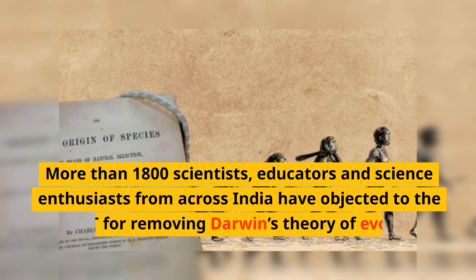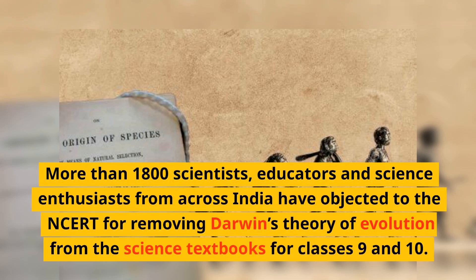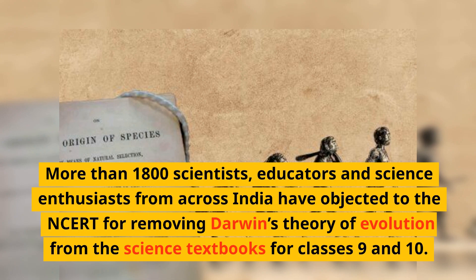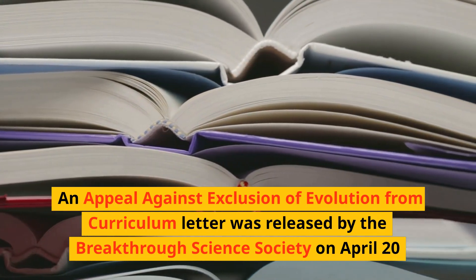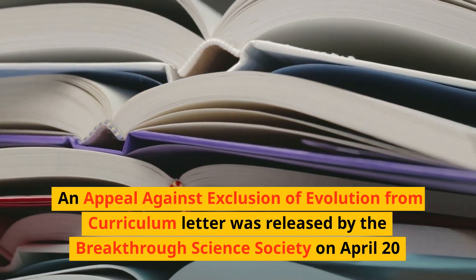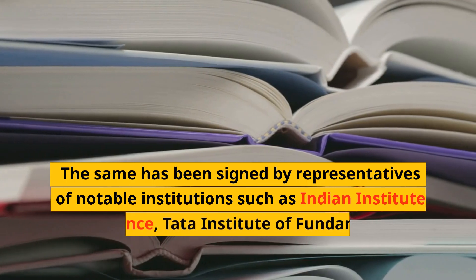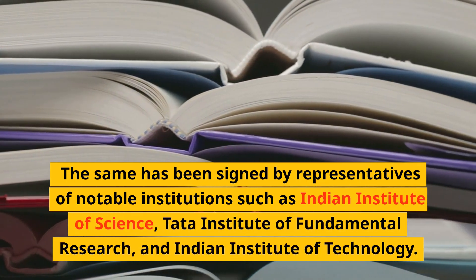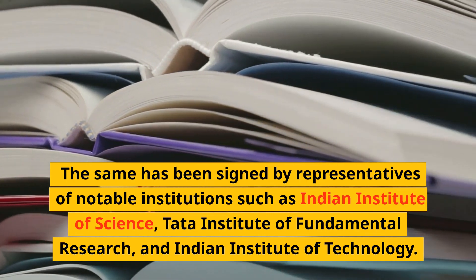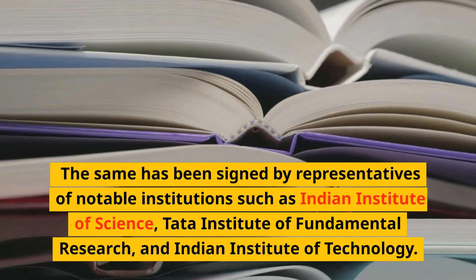More than 1800 scientists, educators, and science enthusiasts from across India have objected to the NCERT for removing Darwin's theory of evolution from science textbooks for classes 9 and 10. An appeal against the exclusion of evolution from the curriculum was released by the Breakthrough Science Society on April 20, signed by representatives of notable institutions such as the Indian Institute of Science, Tata Institute of Fundamental Research, and Indian Institute of Technology.